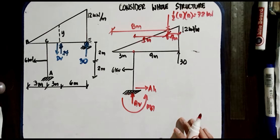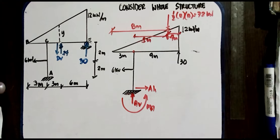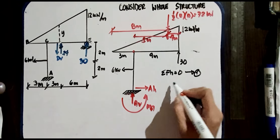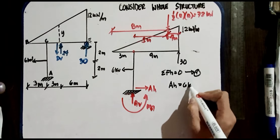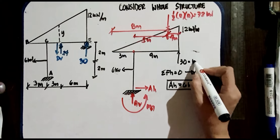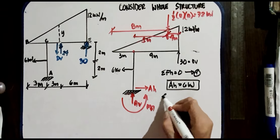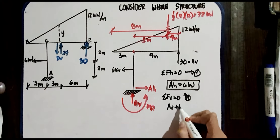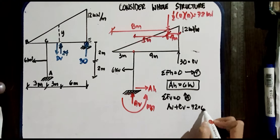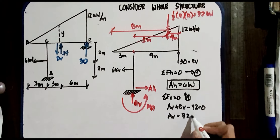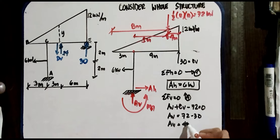To find AH, we use summation of horizontal forces equal to 0, positive to the right. AH = 6 kN. Next, to find AV, summation of vertical forces equal to 0, upward positive: AV − 72 + 30 = 0, so AV = 72 − 30 = 42 kN.